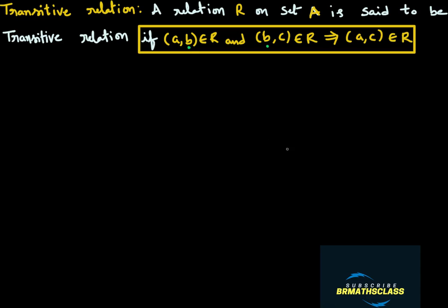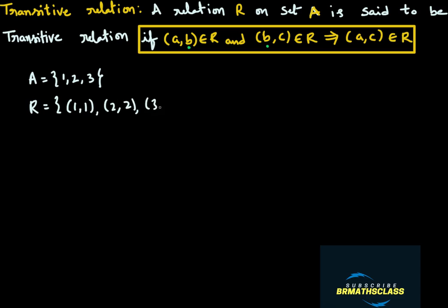We will try to understand the definition of transitive relation with an example. I will take set A equal to {1, 2, 3}. Now I will take a relation on set A. By this time, you know what is a relation on A — I discussed it in the reflexive and symmetric relation definitions. So I will take a relation on A. That relation is: ordered pair (1,1), ordered pair (2,2), ordered pair (3,3), ordered pair (1,2), ordered pair (2,3). I have taken a relation on set A. Now I want to check whether this relation is transitive or not.